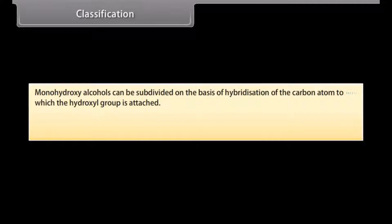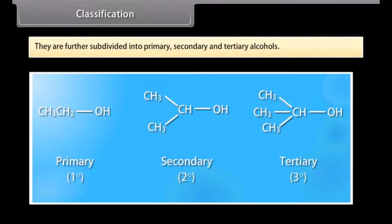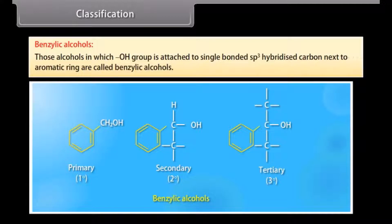Monohydroxy alcohols can be subdivided on the basis of hybridization of the carbon atom to which the hydroxyl group is attached. Compounds containing sp3 hybridized carbon bonded with hydroxyl group are further subdivided into primary, secondary and tertiary alcohols. Allylic alcohols are those in which the hydroxyl group is attached to a single-bonded sp3 hybridized carbon next to a carbon-carbon double bond, i.e., to an allylic carbon. Benzylic alcohols are those in which the hydroxyl group is attached to a single-bonded sp3 hybridized carbon next to an aromatic ring.